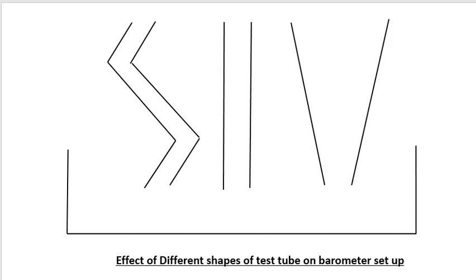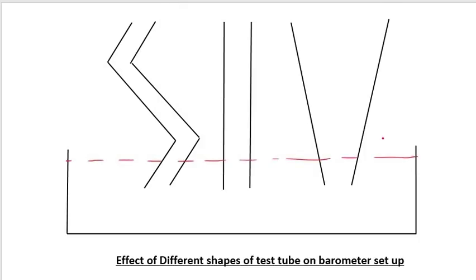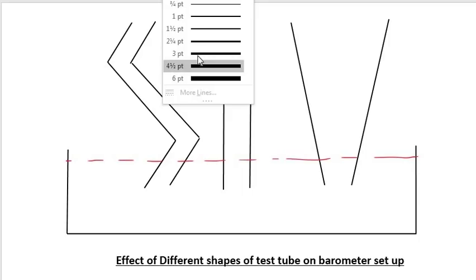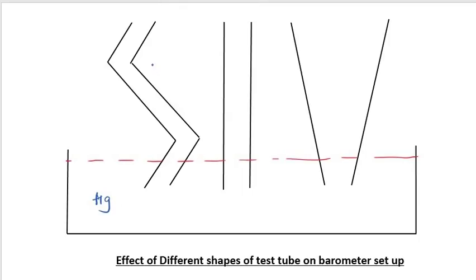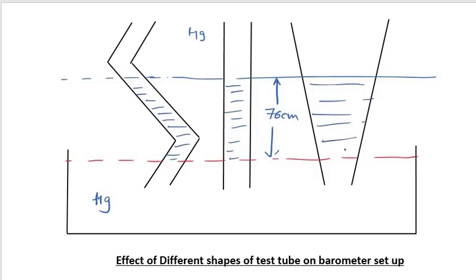What if we take different shapes of container? Again, the shape of the container does not affect our experiment. The perpendicular distance between free surface to free surface remains the same. Mercury will be filled to the same height in all container shapes, though the volume of mercury will differ in all three. The perpendicular height remains the same and it does not affect our experiment.